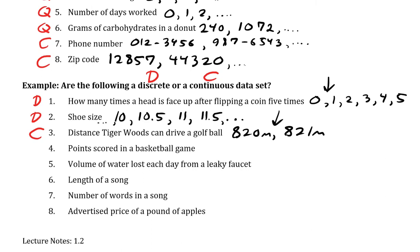Point score in a basketball game is going to be considered discrete. You can count them up just like I would for counting up a coin. I could have the same possible values: 0 points, 1 point, 2 points, 3 points, etc.